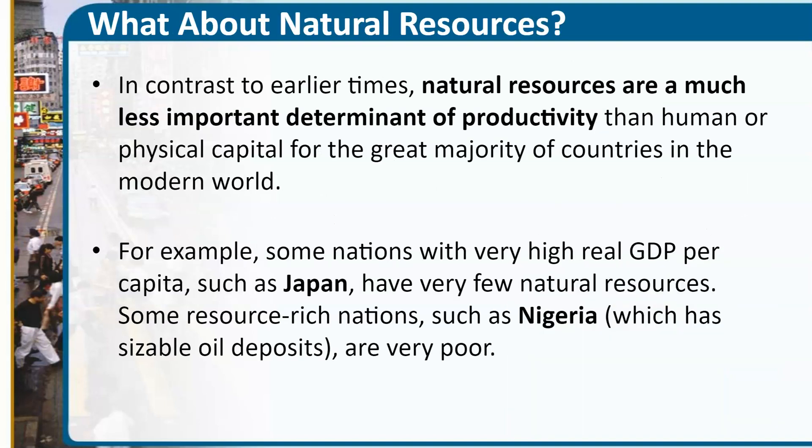What about natural resources? Why does Japan, with very few natural resources, see GDP growing much faster than countries like Nigeria, which sits on the fifth largest oil deposits in the world? Nigeria is resource-rich, but ineffective in terms of its leadership — there is corruption, waste, fraud, and abuse in governmental leadership, which has a definite impact on the economy and the use and utilization of natural resources.